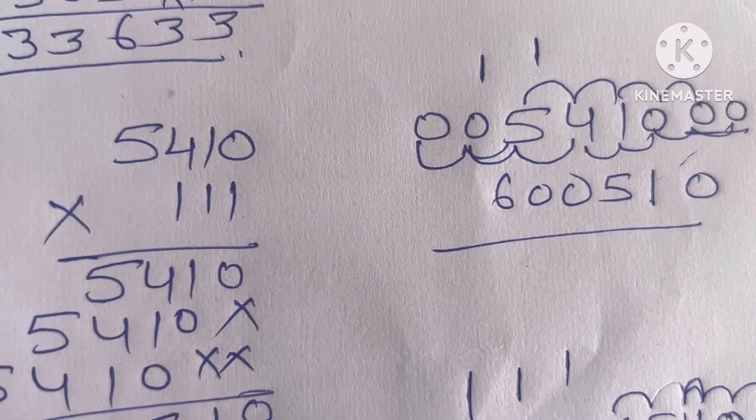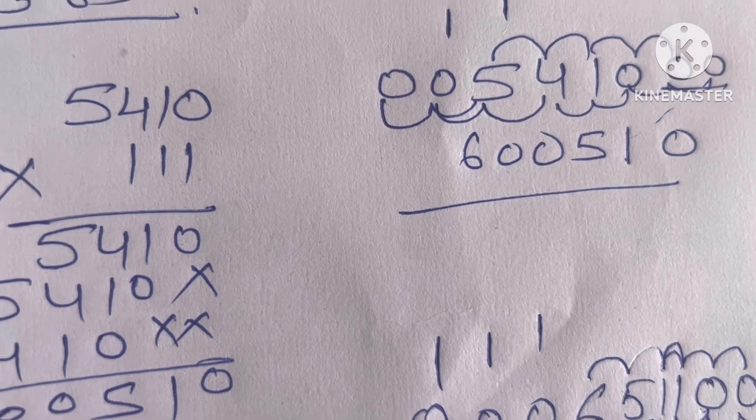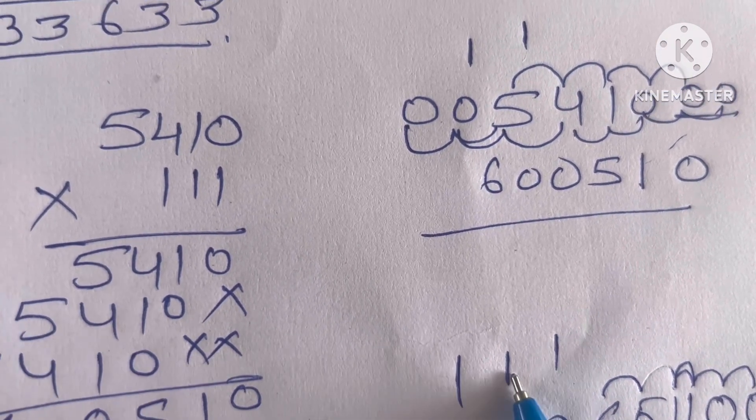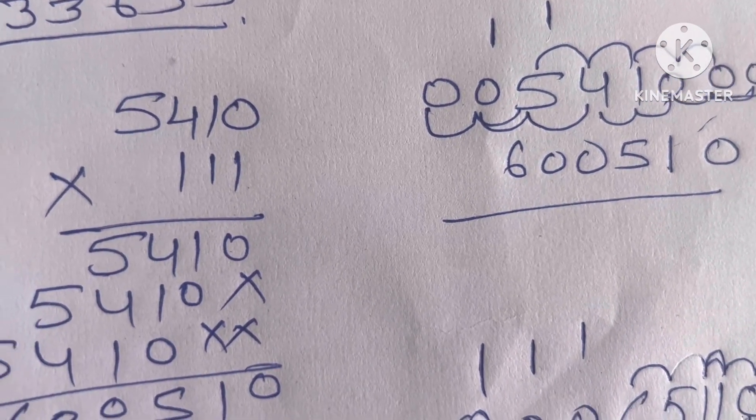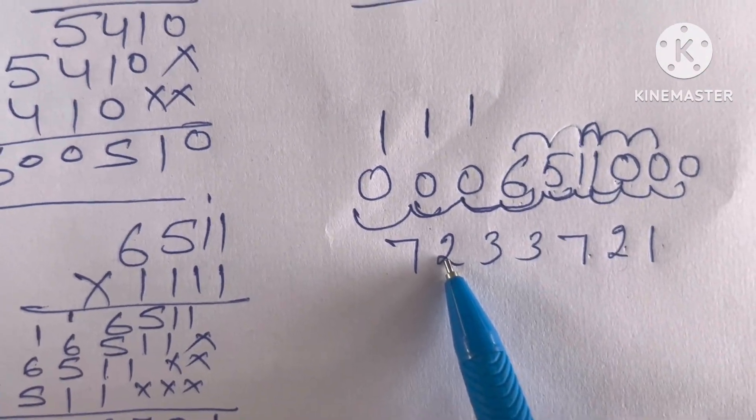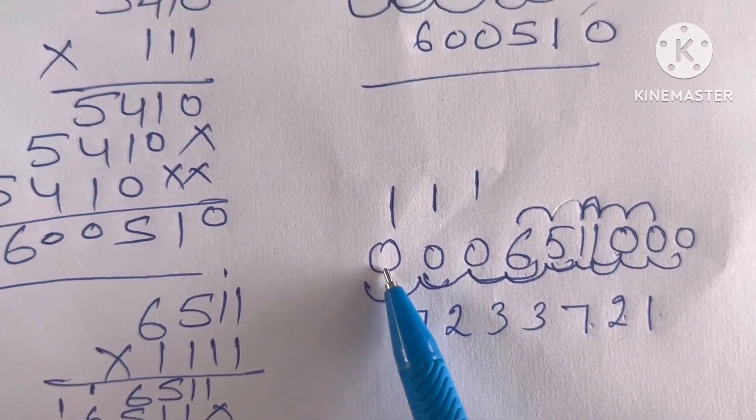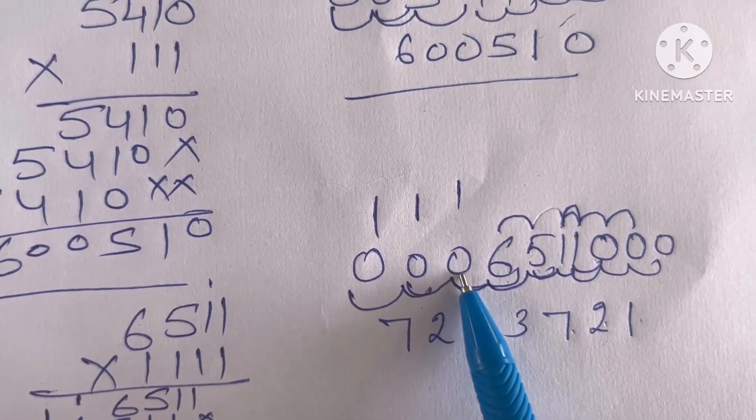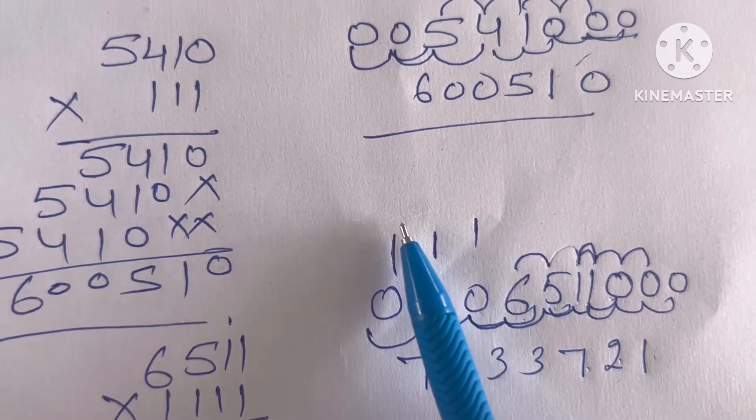Now again 1 carry. 0 plus 0, 0. Plus 6, 6 plus 5, 11. 11 plus 1 carry, 12. Now, start from last 0. 0 plus 0 plus 0, plus 6. 6 plus 1, this carry.